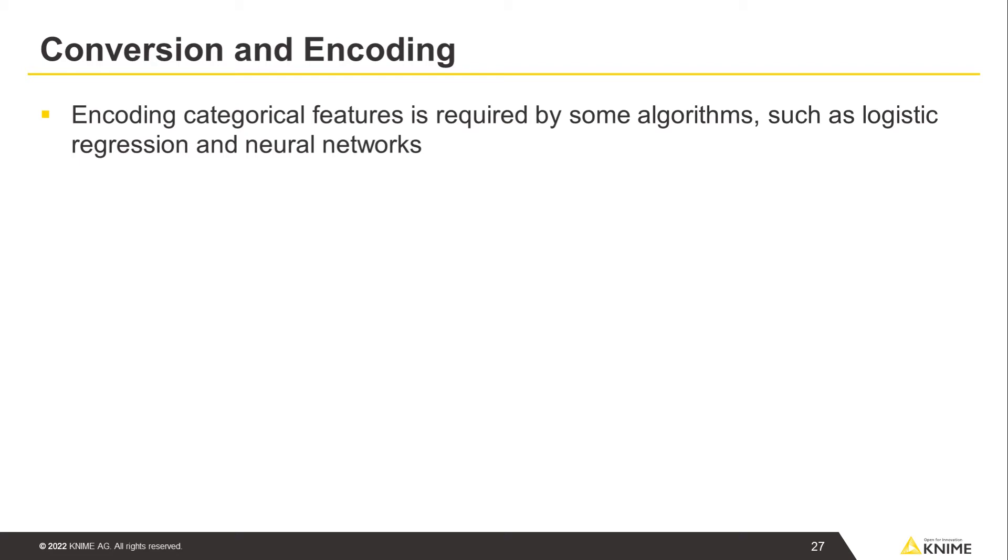Next, we move into encoding categorical features, which might be required by some algorithms, such as logistic regression or neural networks, which can only handle numeric input.